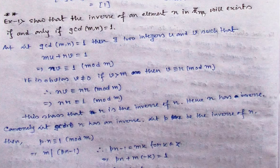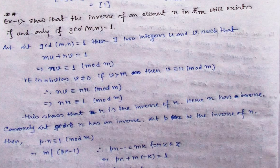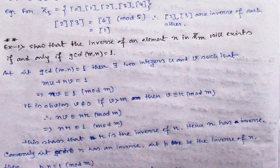To prove this: assume gcd(m, n) = 1. Then there exist two integers u, v such that m·u + n·v = 1. If we divide this by m, the term m·u is a multiple of m so its remainder is 0, and the remaining term is n·v with remainder 1. So n·v ≡ 1 (mod m). The value v should be positive and non-zero (since if v = 0, then 0 ≡ 1 which is never true for any modulus).